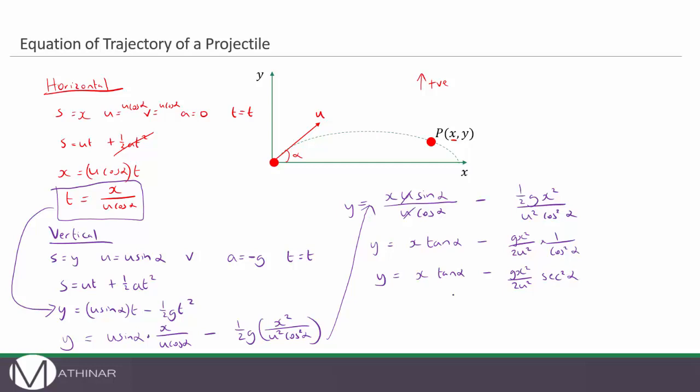So if we substitute that in we get g x squared over two u squared multiplied by one plus tan squared alpha.